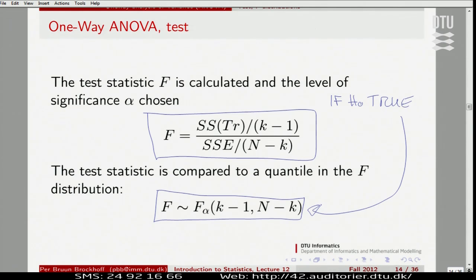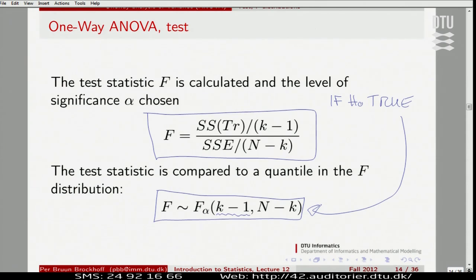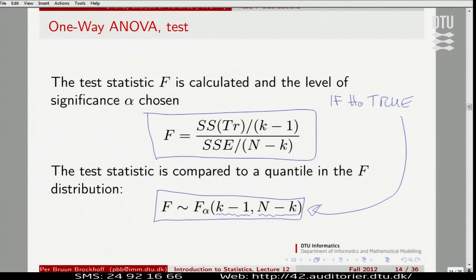We're going to use the right F distribution. The right F comes with k minus one degrees of freedom for the numerator and n minus k degrees of freedom for the denominator. That's the theoretical result that probability theory gives us.